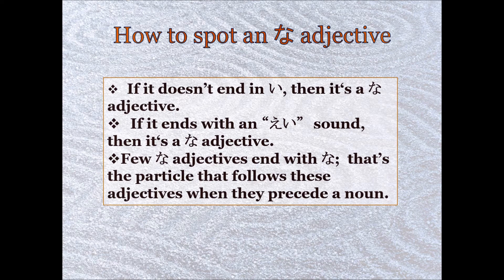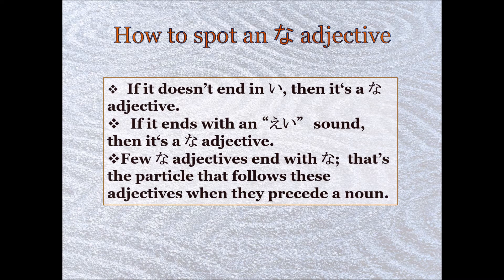Very few na-adjectives actually end with na. We identified the i-adjectives by looking at the end of the adjective. But with na, it's the particle that goes in between the adjective and a noun. For example, if I wanted to say the quiet child, I would say shizuka na ko. Shizuka meaning quiet, na on the particle, and ko being the noun.